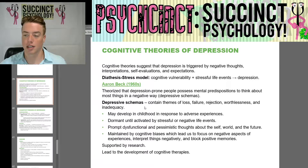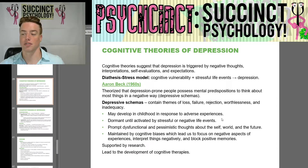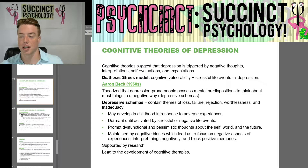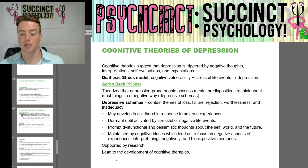A depressive schema contains themes of loss, failure, rejection, worthlessness, and inadequacy. It may develop in childhood in response to adverse experiences and remain dormant until activated by stressful or negative life events. They prompt dysfunctional and pessimistic thoughts about the self, world, and the future, and are maintained by cognitive biases, which lead us to focus on negative aspects of experiences, interpret things negatively, and block positive memories. This is supported by research and led to the development of cognitive therapies.